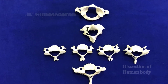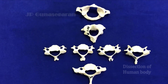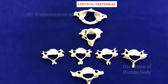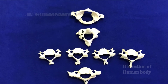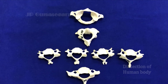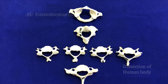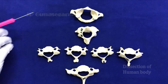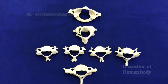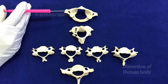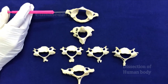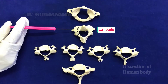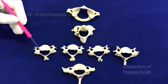Hello viewers. In today's video we are going to see the features of cervical vertebrae. As you all know, there are seven cervical vertebrae numbered from C1 to C7. Please remember that there are eight cervical spinal nerves but there are only seven cervical vertebrae. As you can see here, all seven cervical vertebrae are displayed. This is the first cervical vertebra, C1, which is also called the atlas. This is the second cervical vertebra, which is also called the axis.